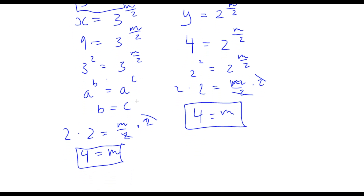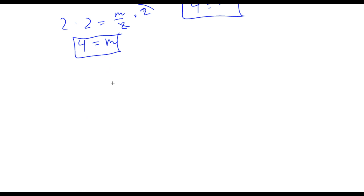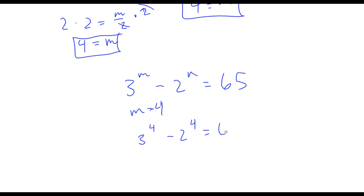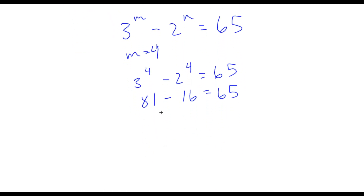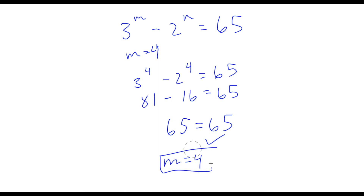Now that we have m equals 4, let's plug it into the original equation to verify. Our original equation was 3 to the power of m minus 2 to the power of m equals 65. Plugging in m equals 4: 3 to the power of 4 minus 2 to the power of 4 equals 81 minus 16, which equals 65. Since 65 equals 65, we confirm that m equals 4 is correct.